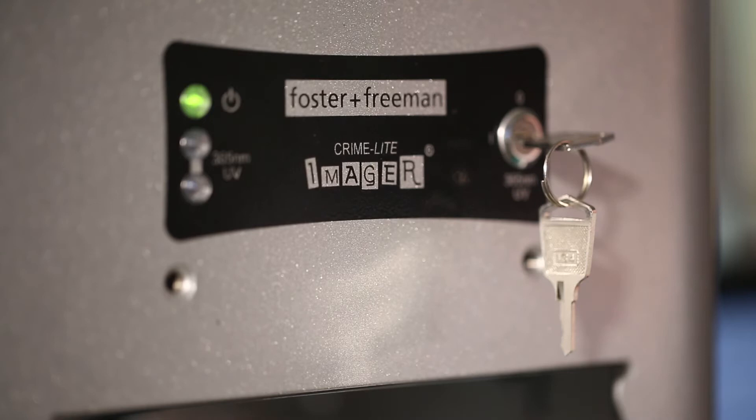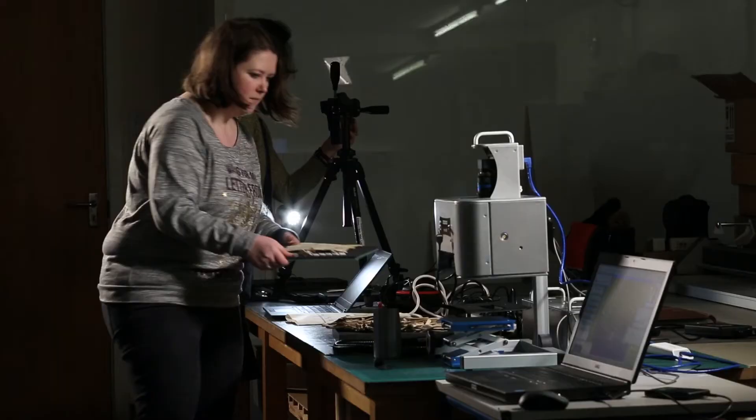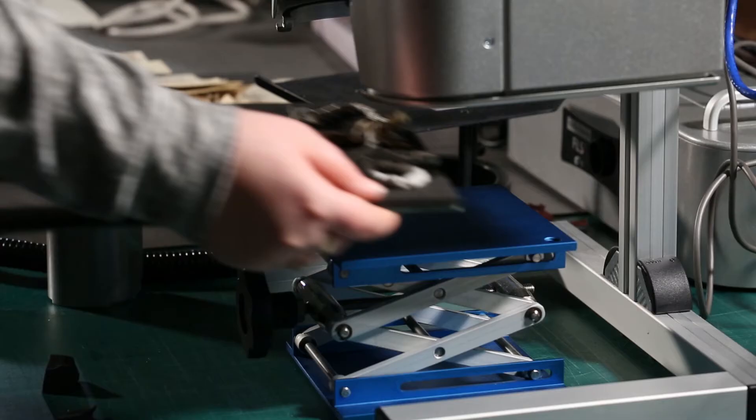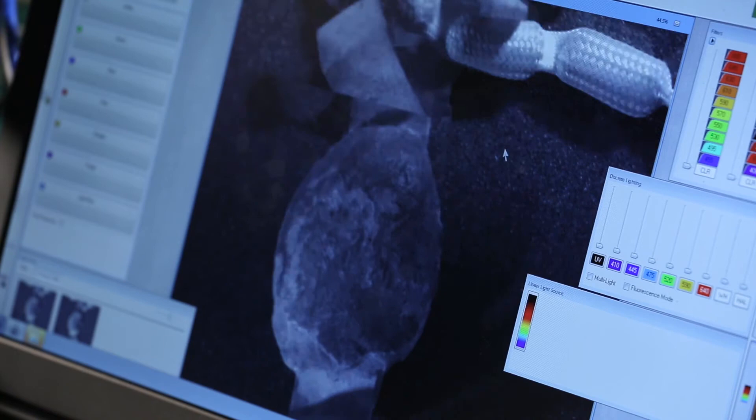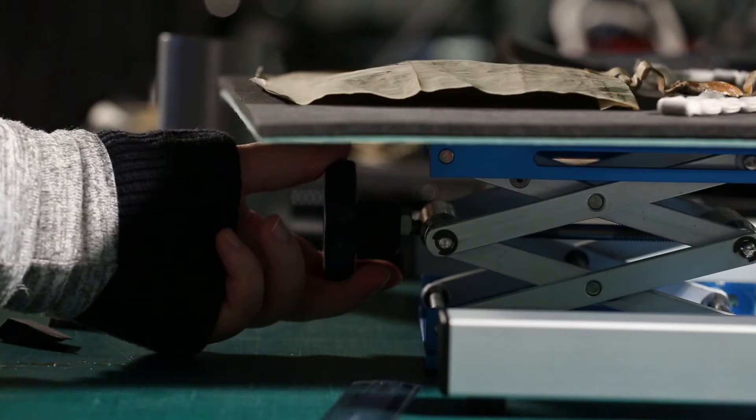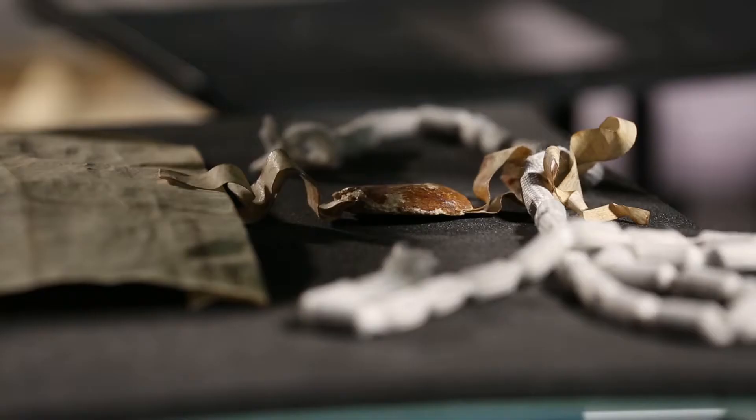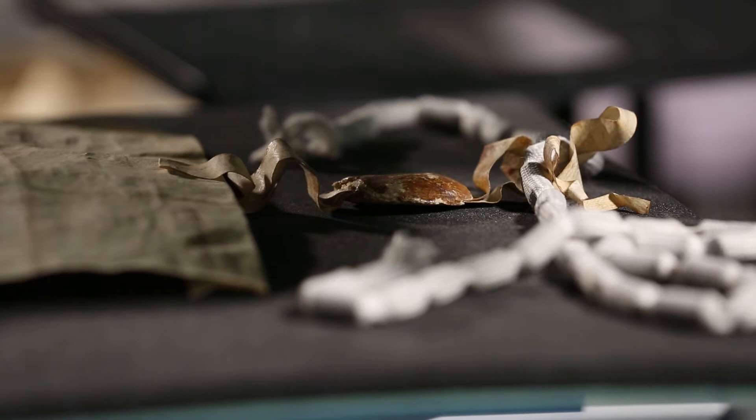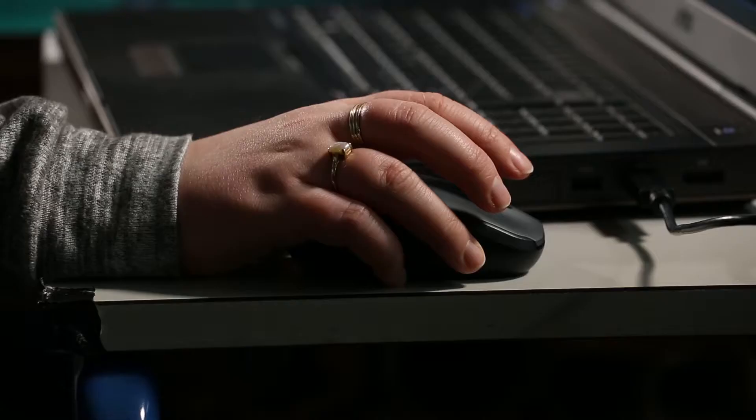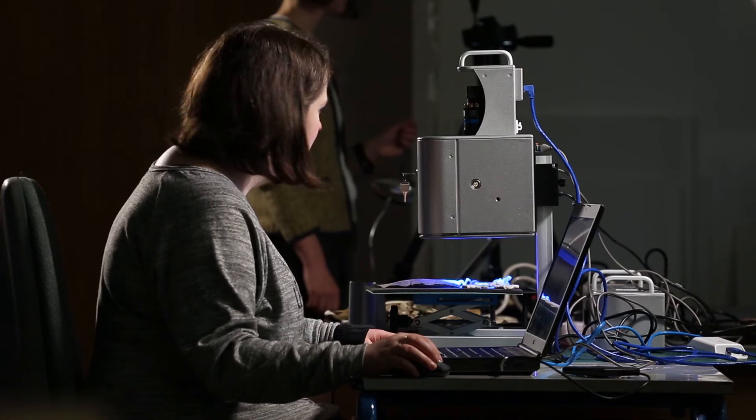The Crime Light Imager is a very specialist piece of equipment. It's used by forensic scientists across the world, and its job is to take images of fingerprints in unusual and difficult situations. So we're able to take the seals that we have and use different light levels, different wavelengths of light.